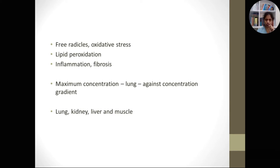All this free radical production and oxidative stress triggers inflammation followed by fibrosis. It affects almost all organs and systems in the body, especially the lung and kidney. The lung is the first organ to get injured and is the most common cause of death. Maximum concentration is attained in the lung due to a high concentration gradient. Other important organs affected include kidney, liver, and muscle.